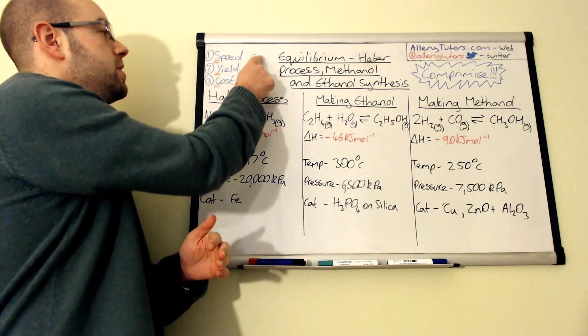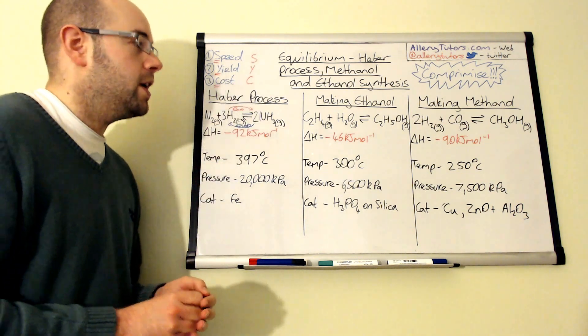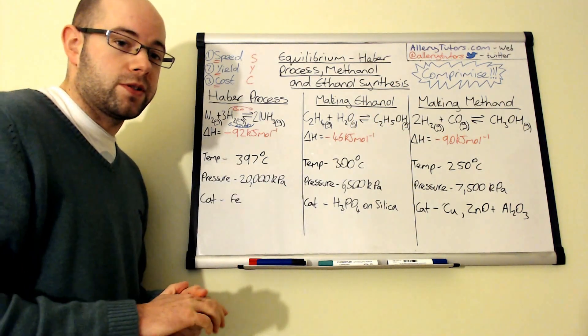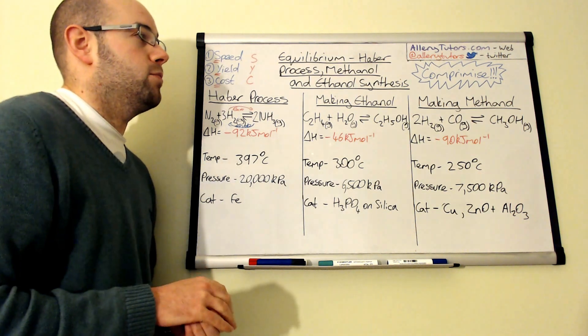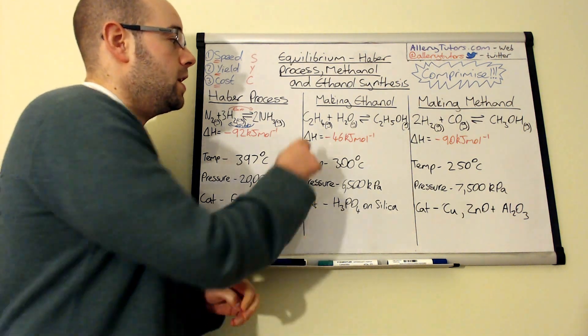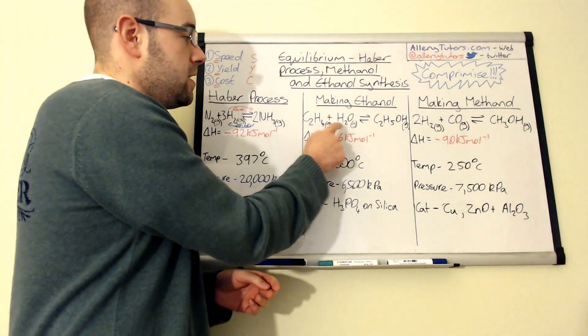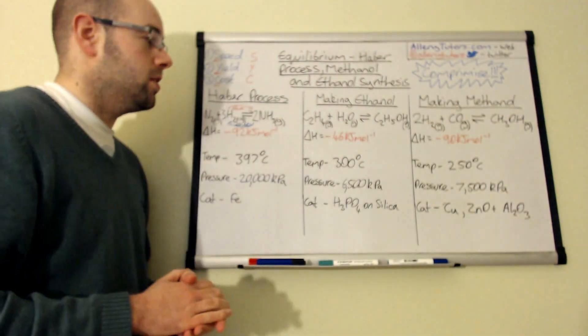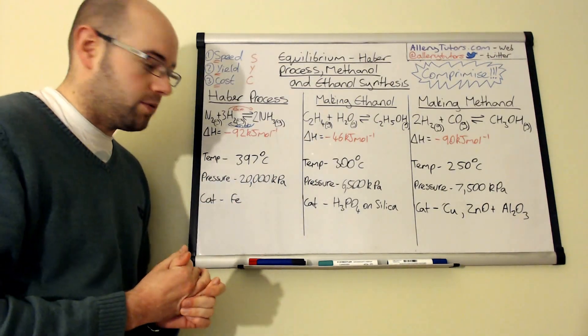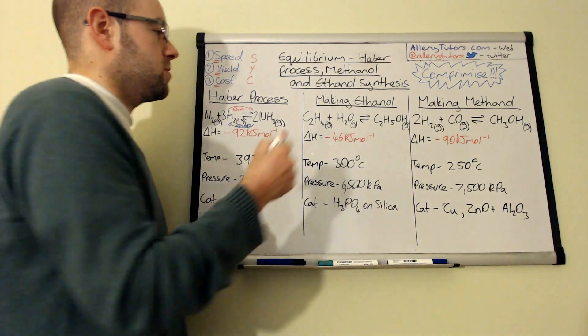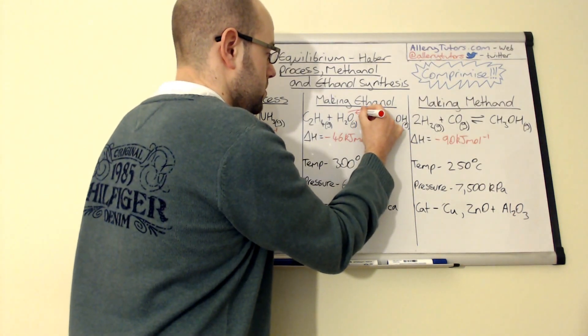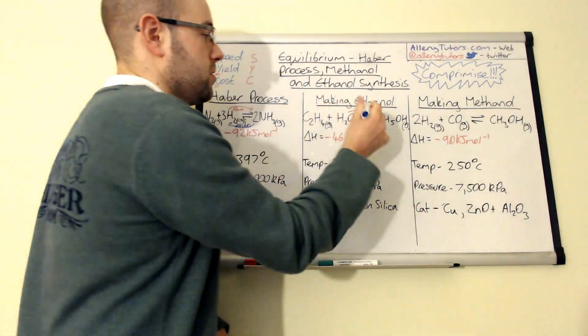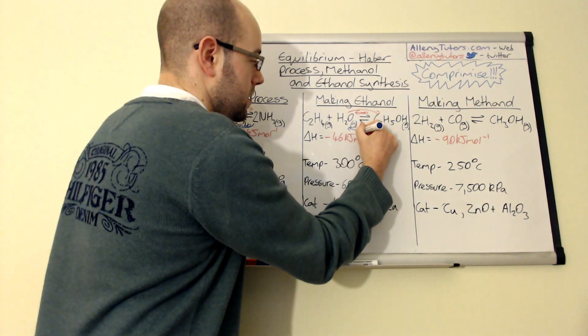Make sure you understand that because this is an applied process and think about the cost implications, the yield, and the speed of the reaction. It's very similar for ethanol and methanol as well. Now ethanol and methanol are good fuels, particularly methanol, but they are greener fuels. This can be made by reacting ethene with steam, and the steam will react with the ethene to form ethanol. You can see this again, this reaction is exothermic in the forward direction and endothermic in the reverse process.